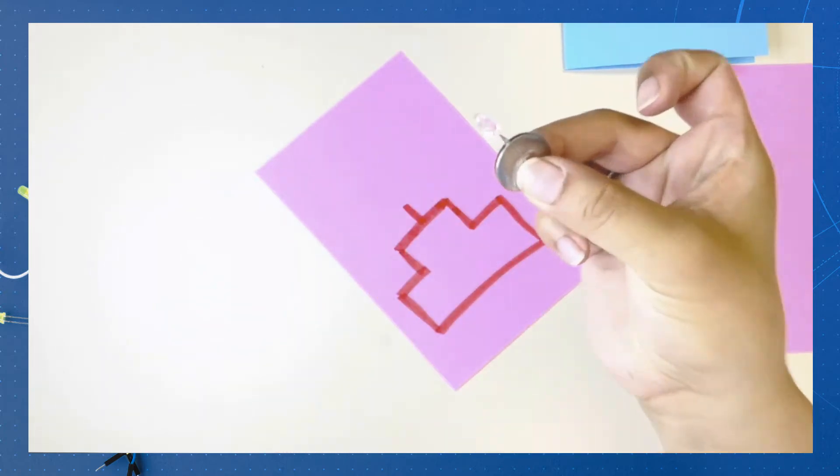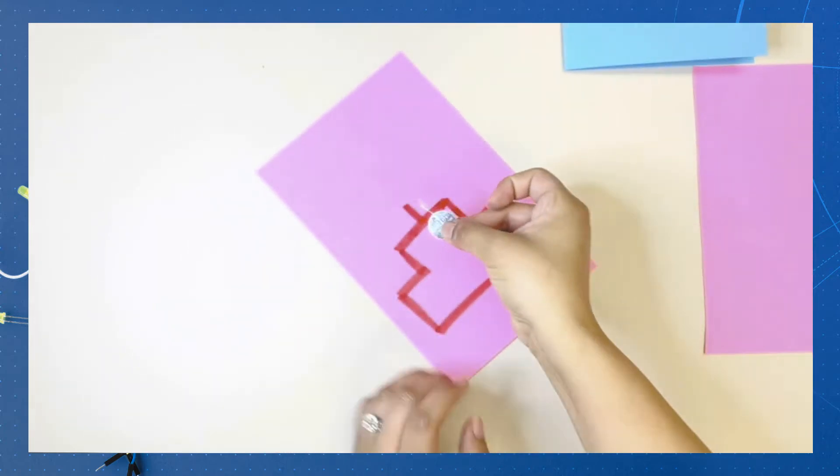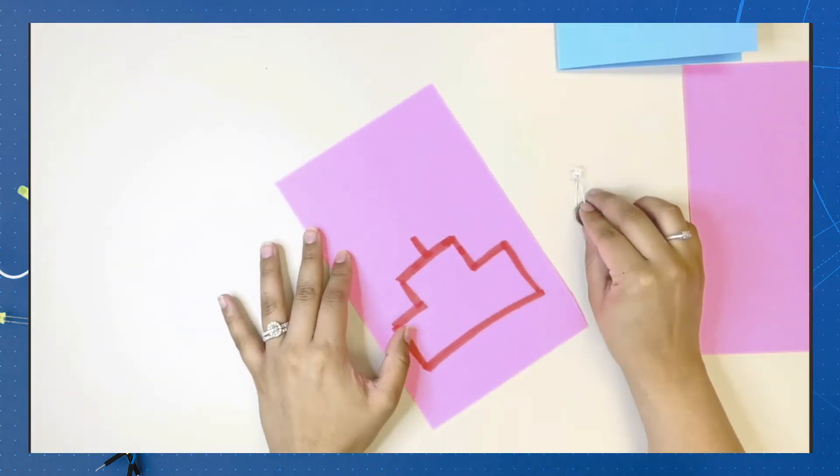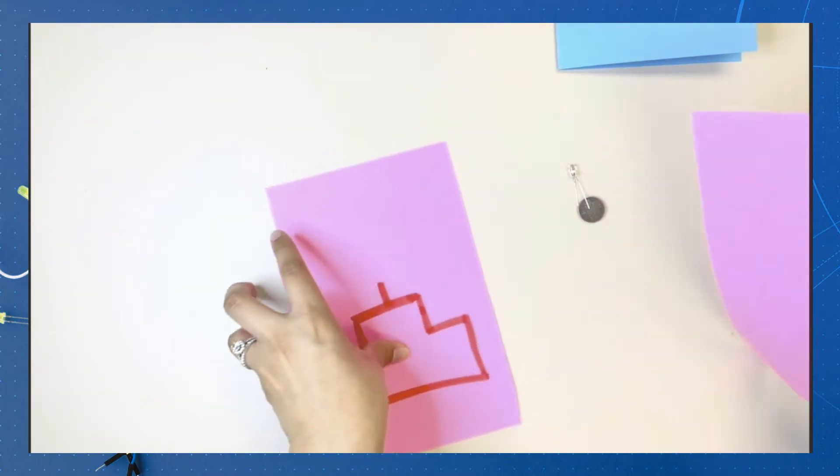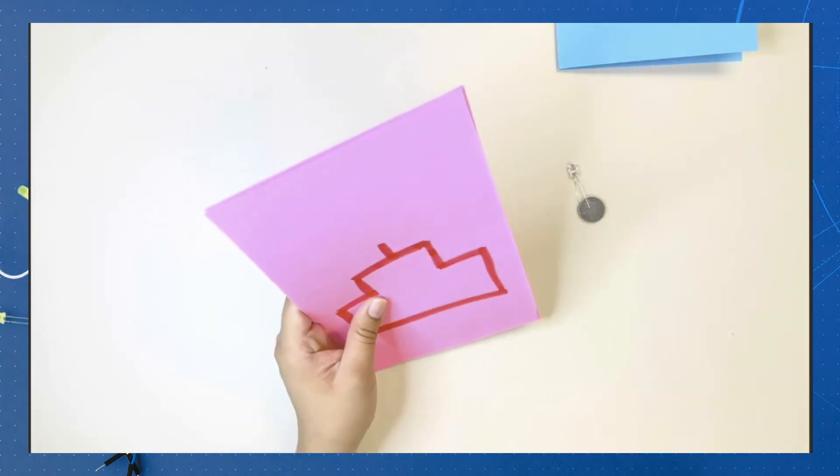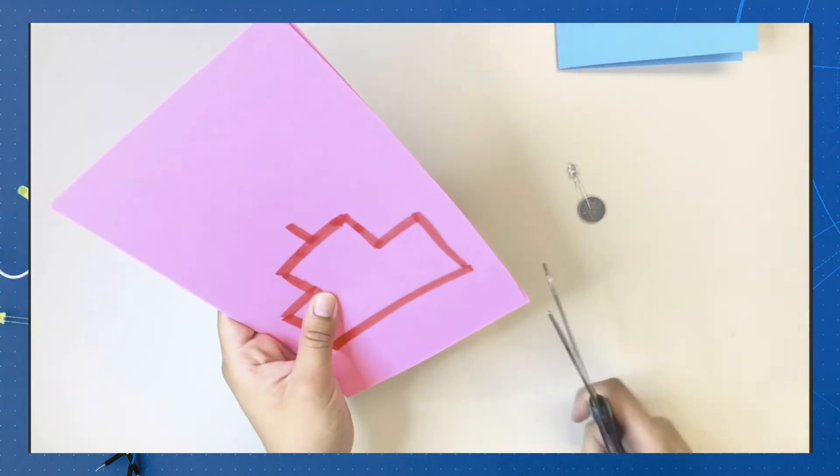When positioning your coin cell battery, be aware that the long leg of your LED is the positive side of your light. The long leg should connect directly to the positive side of the coin cell battery. Stack the two halves of cardstock to cut both of your cake faces at once.